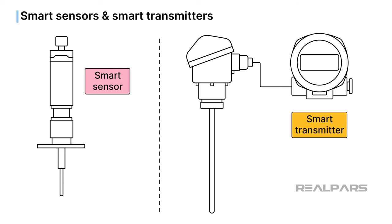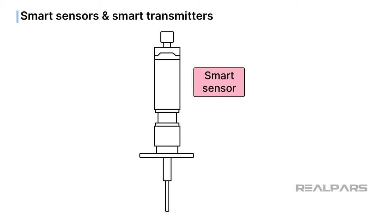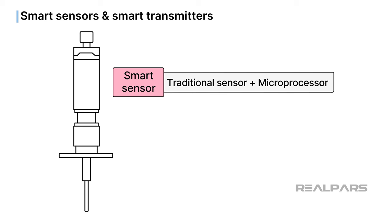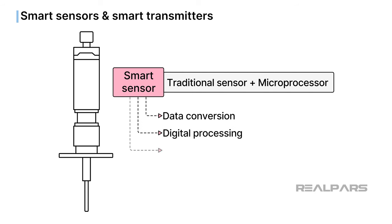Now let's differentiate between a smart sensor and a smart transmitter. A smart sensor goes beyond simply sensing basic physical properties. It combines a traditional sensor with a microprocessor that handles data conversion, digital processing, and facilitates communication with external devices.